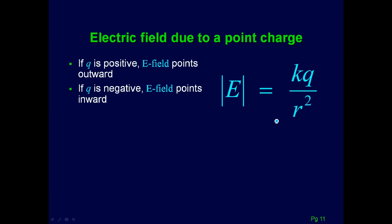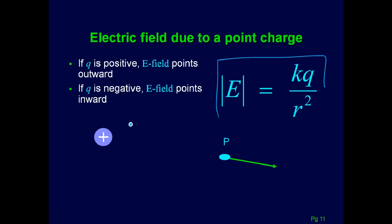Here's the electric field due to a point charge. This looks very similar to Coulomb's Law — it's the same K constant, Q, R squared. The rules are: if Q is positive, the electric field points outward; if Q is negative, the electric field points inward. If we're given a positive charge and want to find the electric field at some point P, we use this equation — we find the distance between them for R, plug in the charge and the constant, and that gives the electric field at that point.